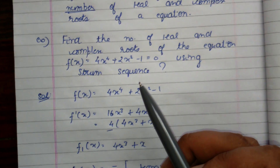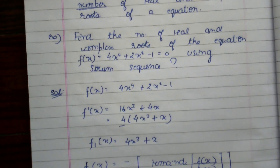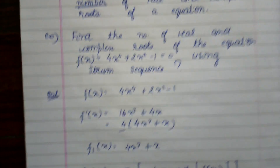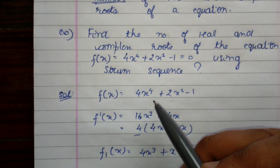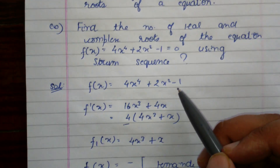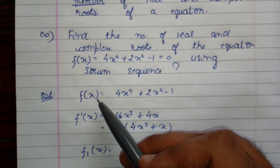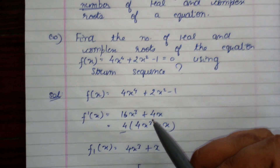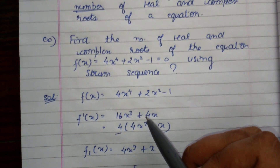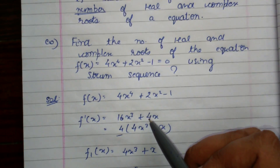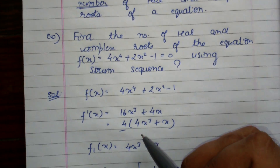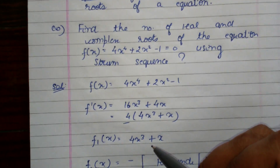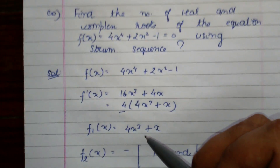I will teach the steps required to find the number of roots of an equation using Sturm sequence. We have f(x) = 4x^4 + 2x^2 - 1. The first step is to find f'(x) by differentiating: we get 16x^3 + 4x. We take the common factor of 4 out, giving 4(4x^3 + x). We cancel the constant and call this f1(x), so f1(x) = 4x^3 + x.